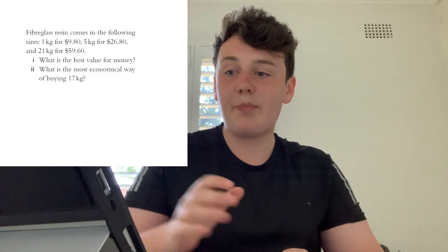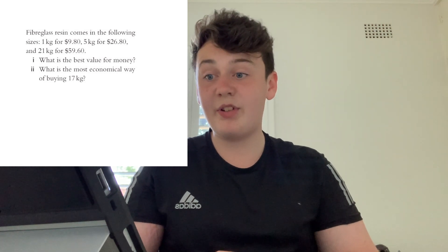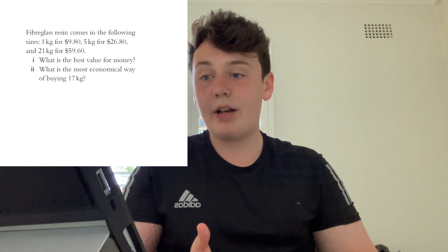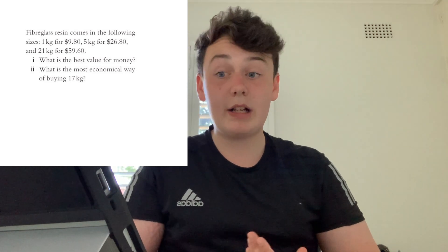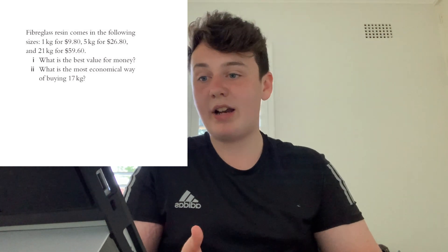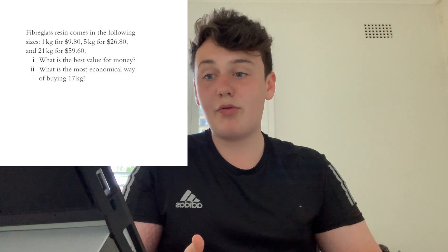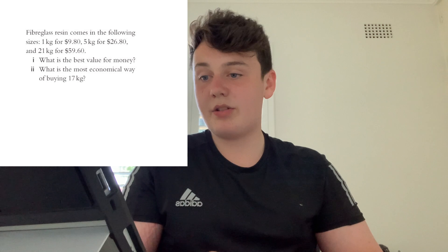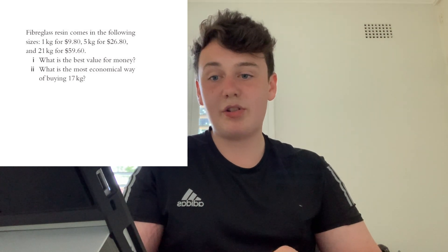The next topic is best buy questions. You need to make sure all options have the same unit — divide down to one unit. For example: fiberglass resin comes in 1 kg for $9.80, 5 kg for $26.80, and 21 kg for $59.60. Dividing: 5 kg gives $5.36 per kg, and 21 kg gives $2.84 per kg. So the best value is buying the 21 kg for $59.60.